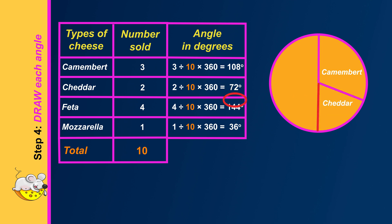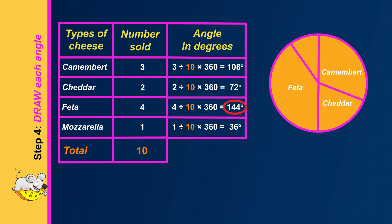This is the starting line for the next cheese, feta. The angle for feta is 144 degrees. A right angle is 90 degrees, and two right angles or a straight line is 180 degrees. Halfway between these is 135 degrees, which is quite close to the 144 degrees for the feta angle. Using a protractor and a ruler, draw the sector that represents feta. The remaining sector is for mozzarella. Remember to write a title for the circle graph.